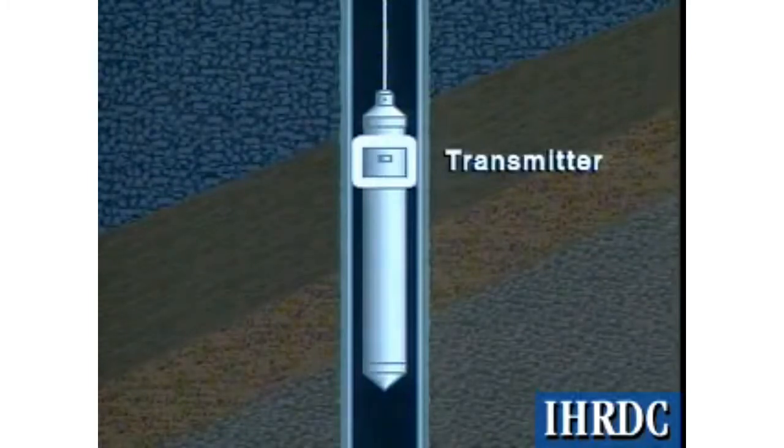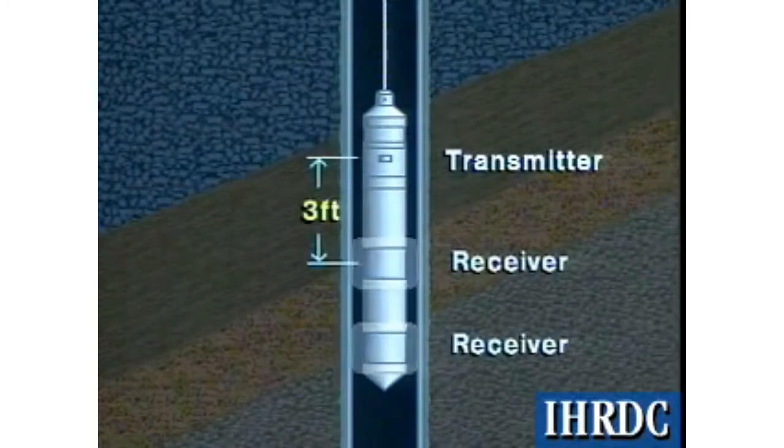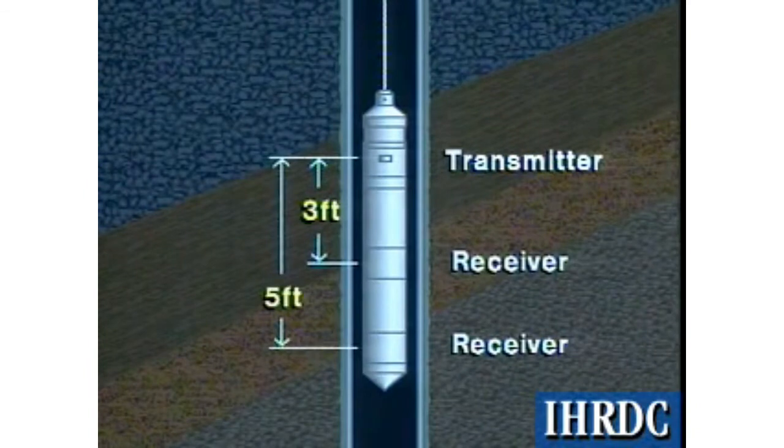The tool includes an acoustic transmitter and usually two receivers located 3 feet and 5 feet (0.91 and 1.52 meters) from the transmitter.